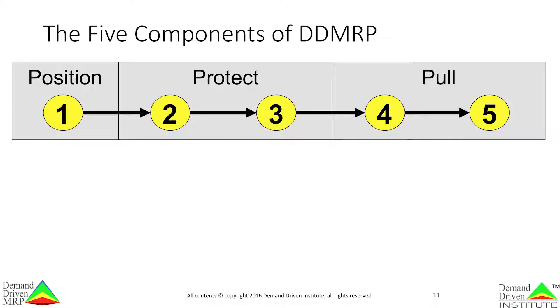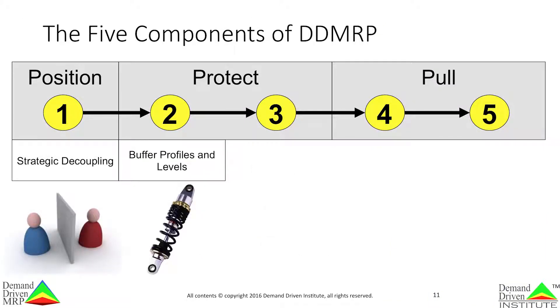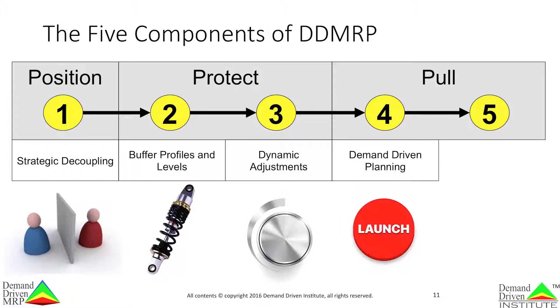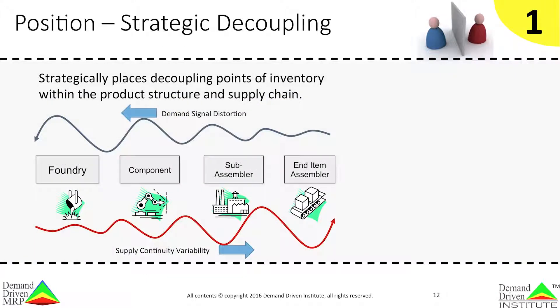DDMRP has five sequential components: strategic decoupling, buffer profiles and levels, dynamic adjustments, demand-driven planning, and finally, visible and collaborative execution. Let's look at each one of these components in more detail.